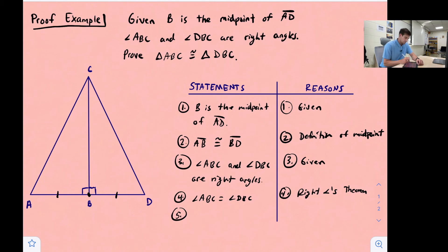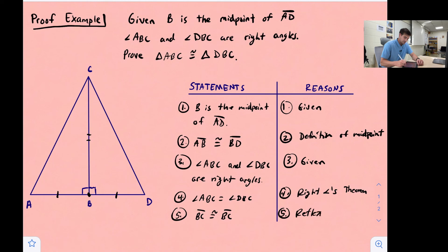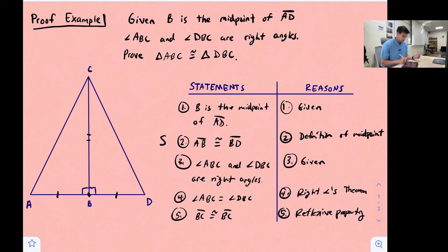Statement five: since side BC is shared by both triangles, it must be the same length. So we can say segment BC is congruent to itself, and we call that the Reflexive Property. Now we have all the information we need — we've proved side AB congruent to side BD, the two angles congruent, and the third side using the Reflexive Property.